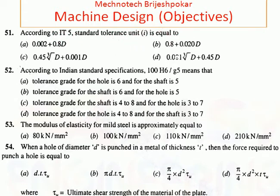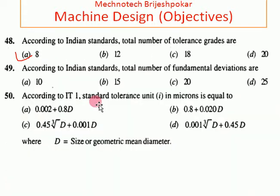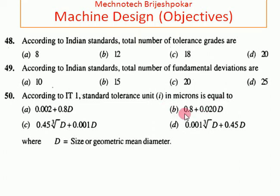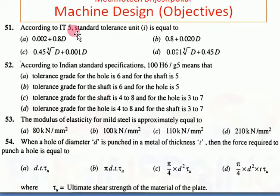The answer is 0.45 times the cube root of d plus 0.001d. As we saw last time, the total number of tolerance grades is 18. According to the IT1 standard, the tolerance unit i in microns — the answer is option B. For IT5, the answer is 0.45, so the answer is C.